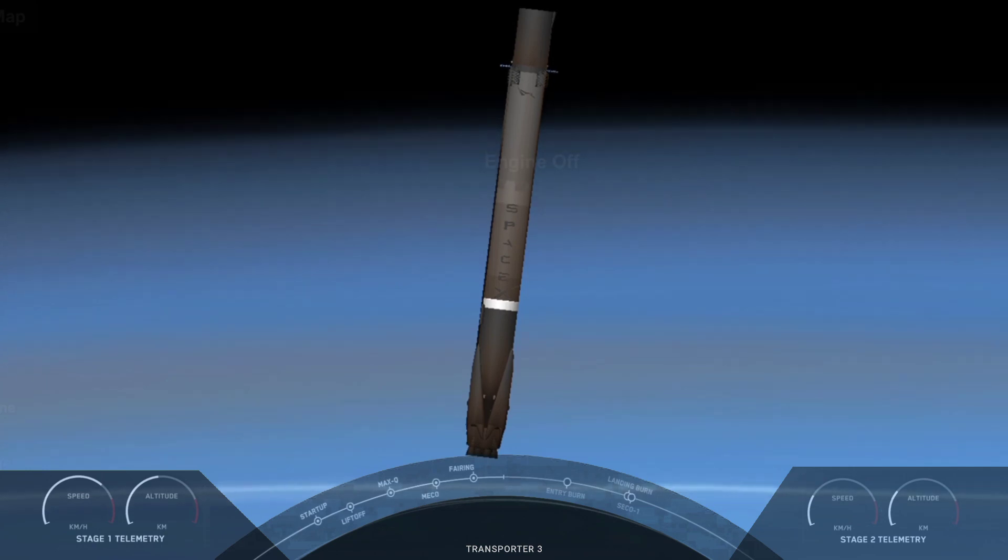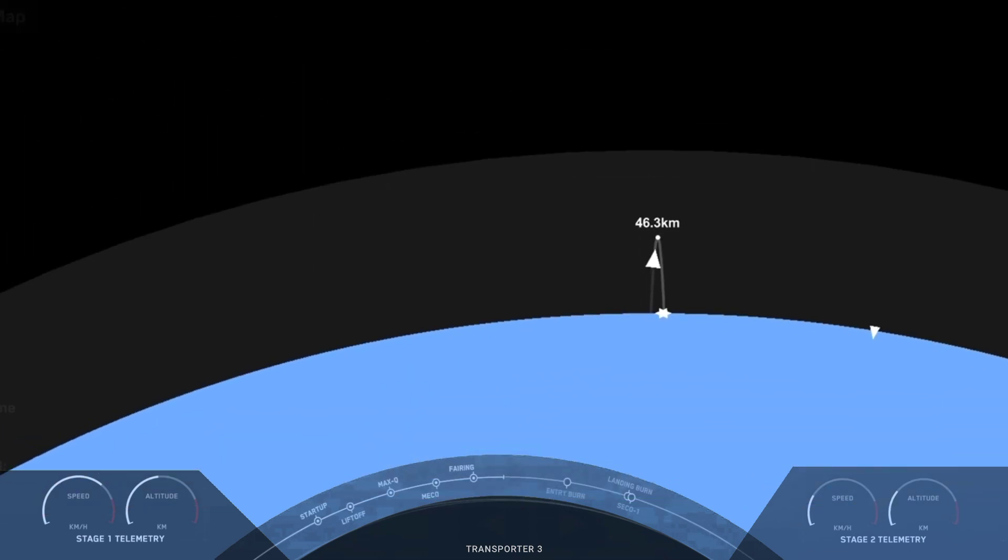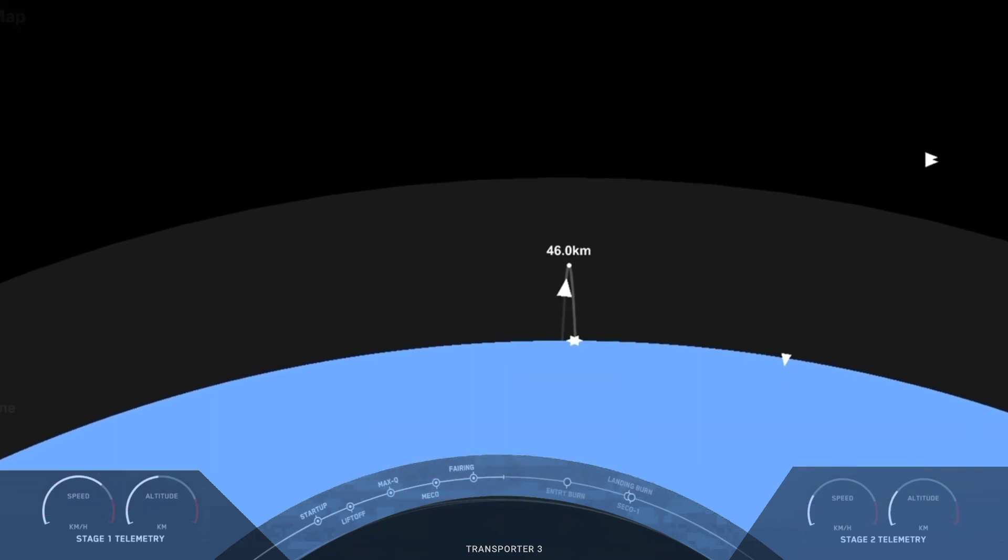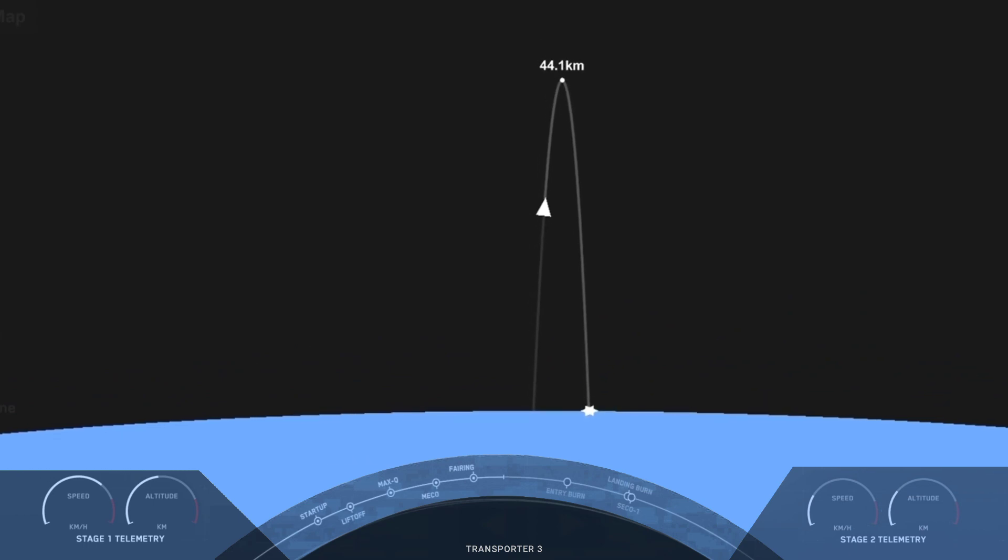As I mentioned earlier, we'll be attempting to recover this booster for the 10th time today and we're targeting a landing at landing zone one. The first stage has just one more burn left: the landing burn. It begins just before touchdown and provides the booster a soft descent before landing. About the same time that Falcon lands, we are expecting SECO or second engine cutoff.